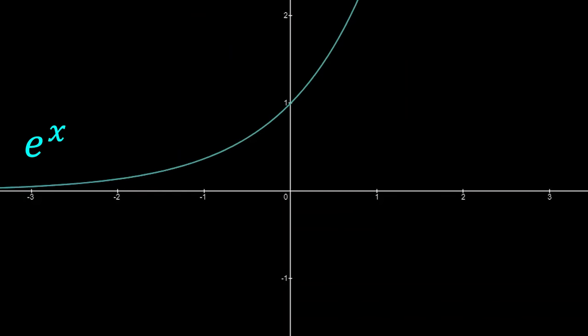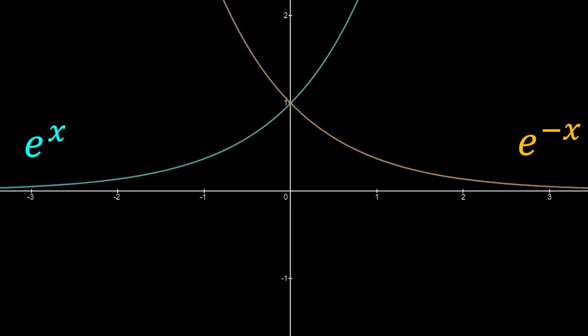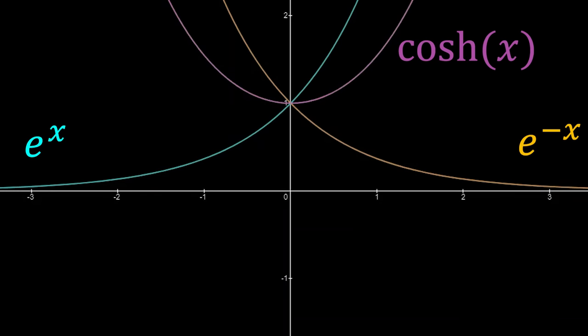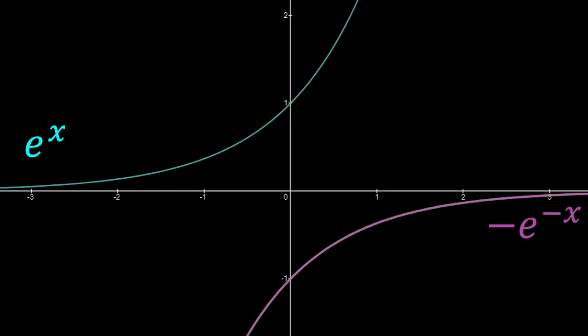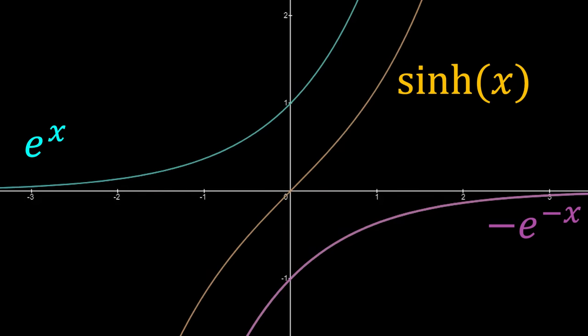Now that I've defined them, I can graph them. To graph hyperbolic cosine of x, I take e to the x and e to the minus x and take their average, which gives this very nice plot of hyperbolic cosine — and indeed, visually that looks like an even function. Hyperbolic sine is the average of e to the x and negative e to the negative x, which creates this odd function.